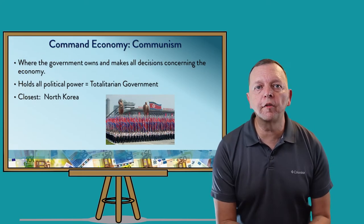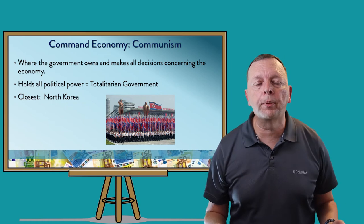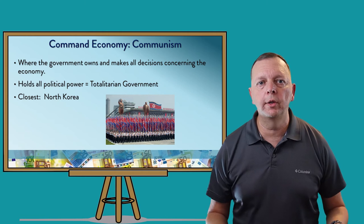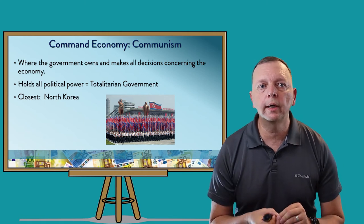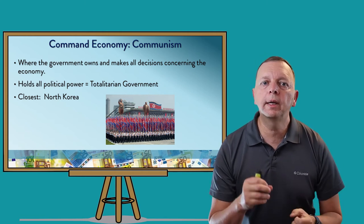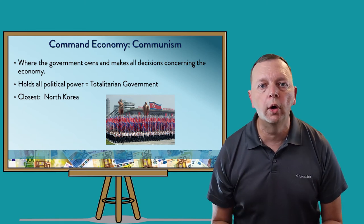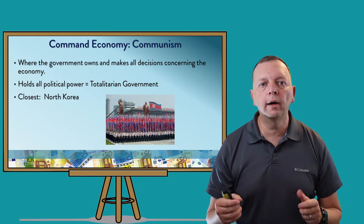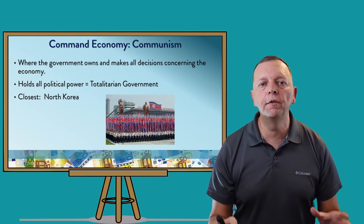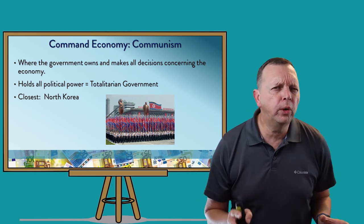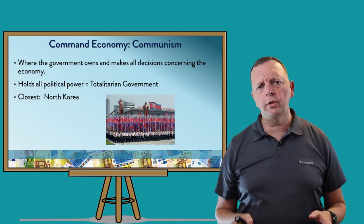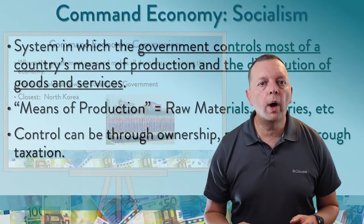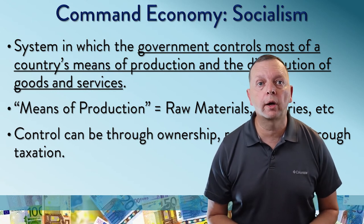Now, communism is when the government owns, on behalf of all the people, all the property, and will make all the decisions concerning the economy. In order to run a communist country, a totalitarian government had to hold all that political power. Because just like Adam Smith, Karl Marx understood that people had an interest in their own self-interest, and it would only be a strong government that would be able to force everyone to share. We don't really have any true communist countries in the world today. The closest really comes to be North Korea.